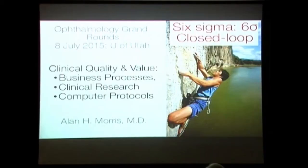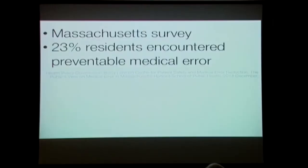I want to talk about how we should think about integrating the domain of activities that occupies most of us right now, which is business processes, CQI, Six Sigma, Toyota. How do we get better value? You hear the dean speak about value, and everybody's supposed to know exactly what that means. With clinical research results and computer protocols, and how can we target Six Sigma performance? That's three errors per million interactions. Just think about that — three errors per million interactions, and what the role of closed-loop control, getting a clinician out of the way so that some decisions are made automatically by rule systems.